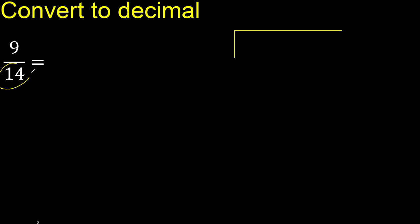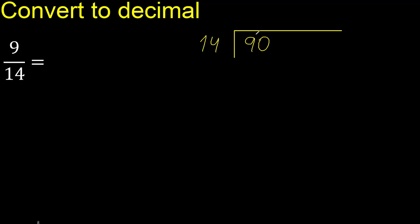9 divided by 14. Since 9 is less than 14, it is not divisible, so we complete with 0. Now we have 90. 0.90 is not less, so we proceed: 14 multiplied by which number gives the nearest value to 90 but not greater?